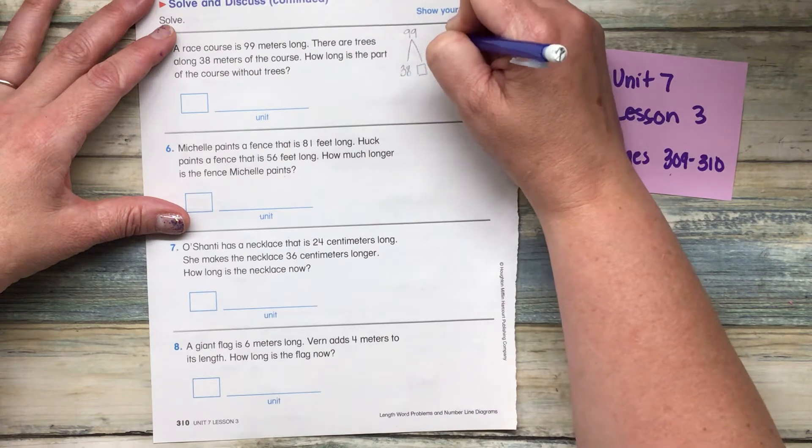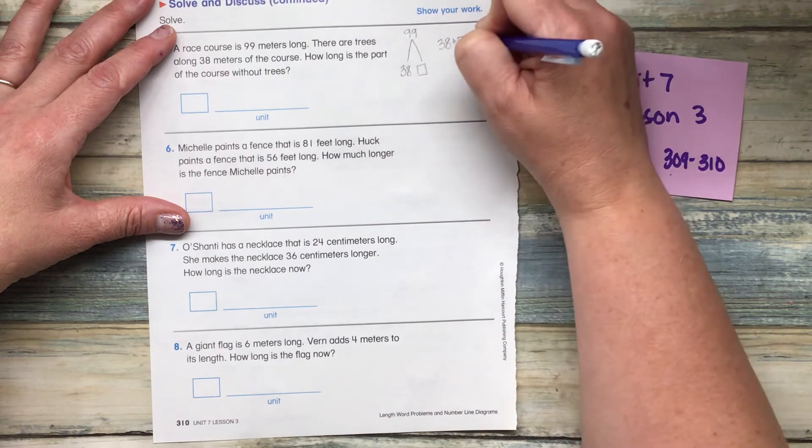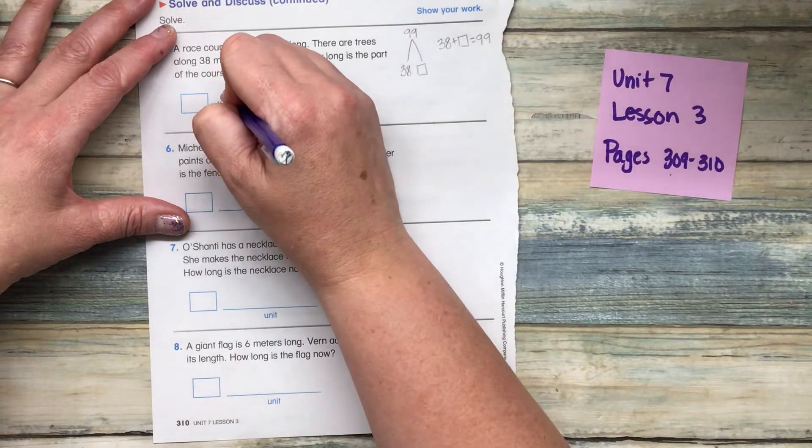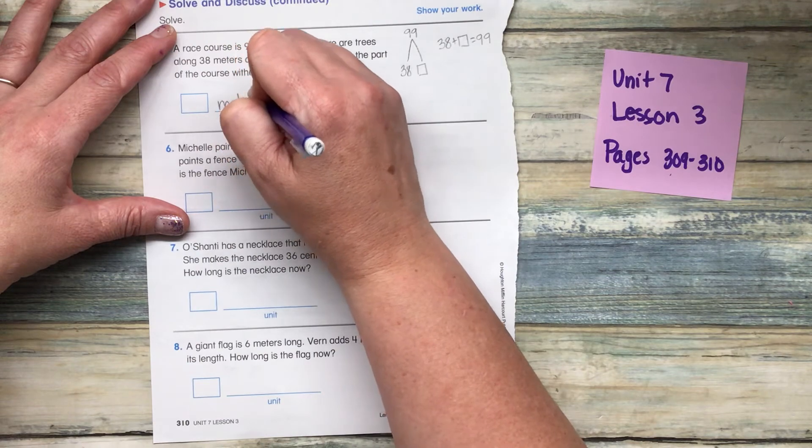So what's the total meters of the course? So we have 38 plus box equals 99. And the label is meters.